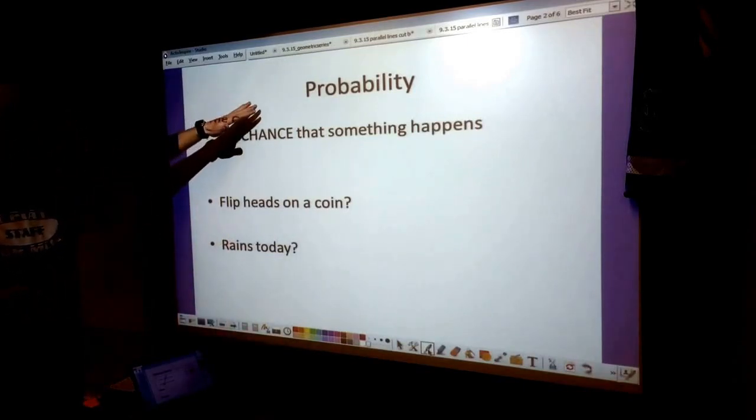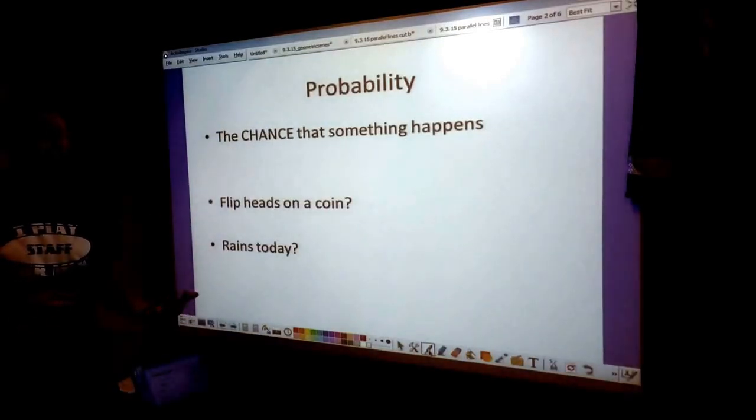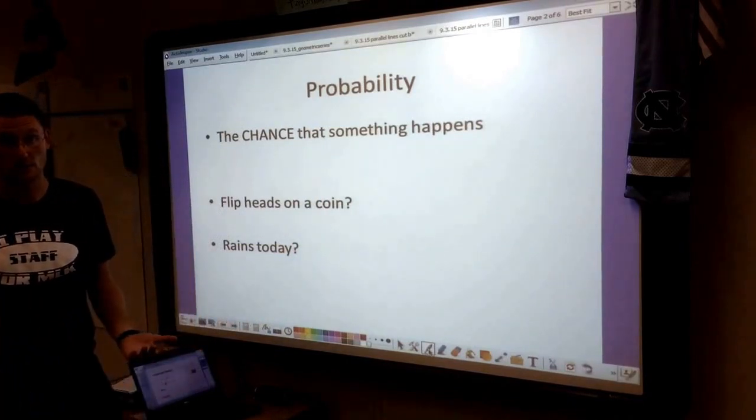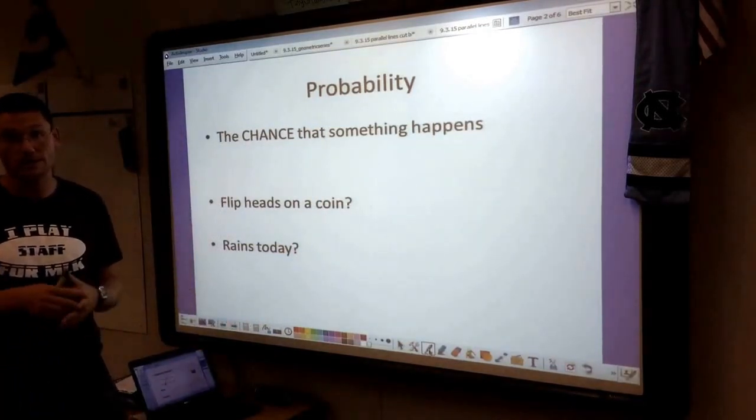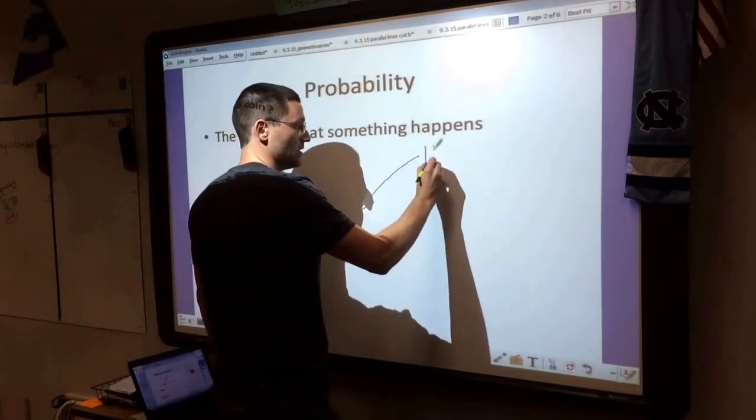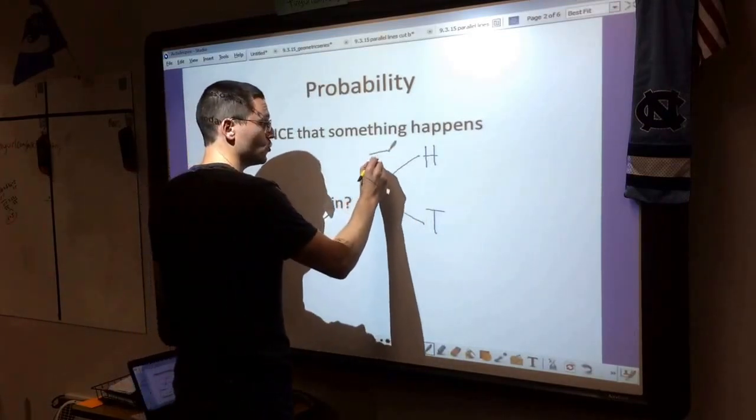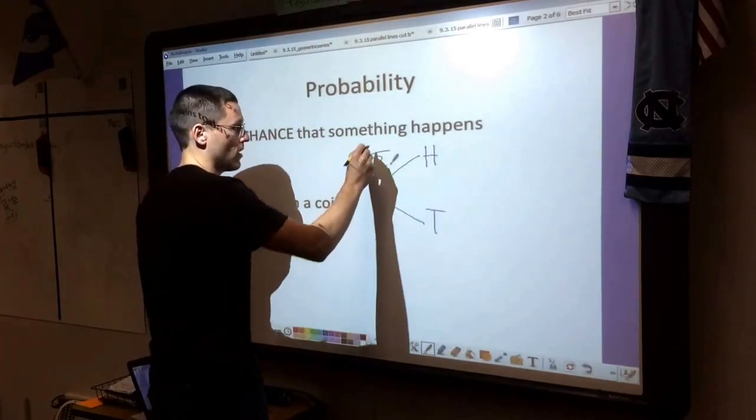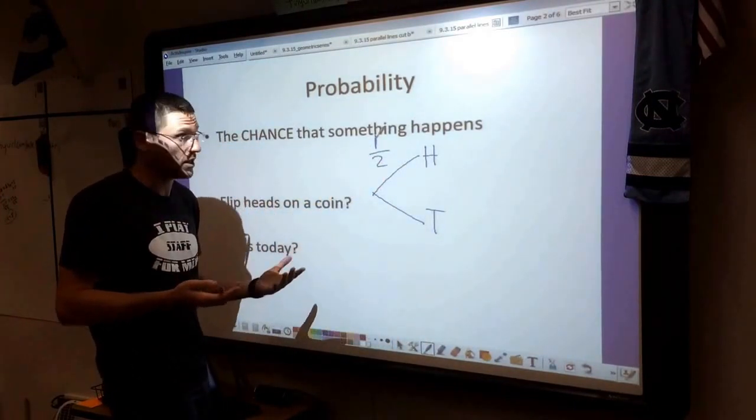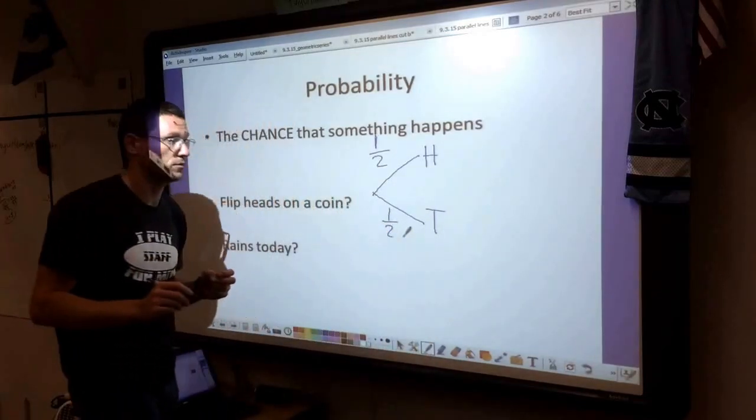We're going to start by talking about probability, which is the chance that something happens. If I take a coin and flip it, there's a chance it's going to land on heads. You should know if I flip a coin, it's a 50-50 chance. I can either get heads or tails. There's two possible things that I can flip and one of those is heads. So there's a one-half chance or one-half probability that I flip heads. Same thing with tails.